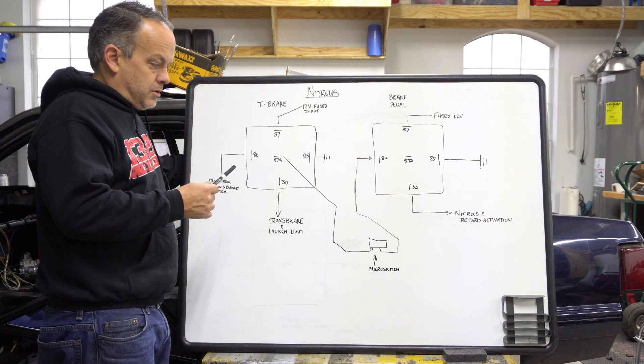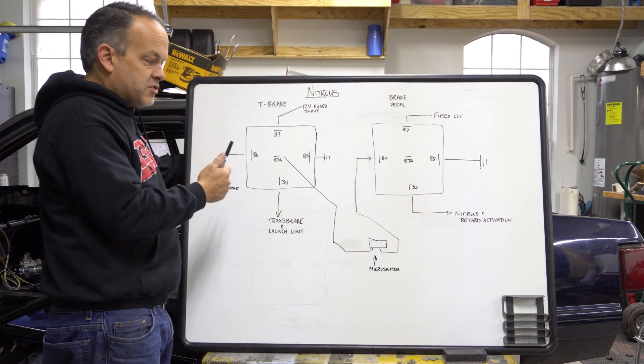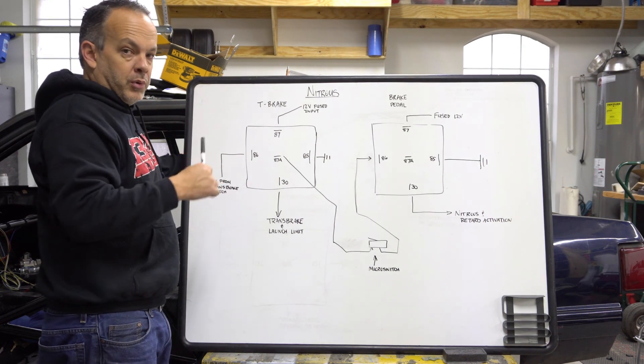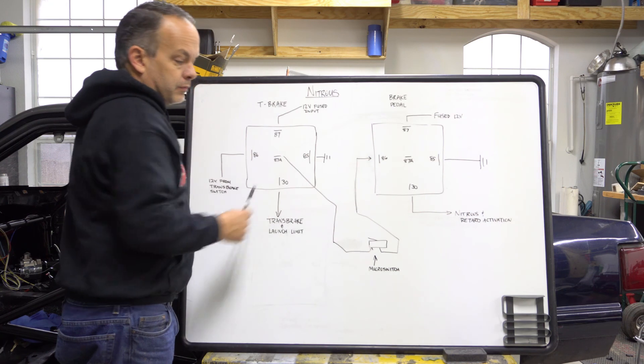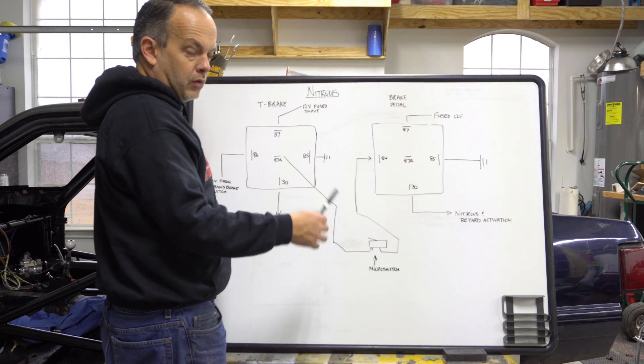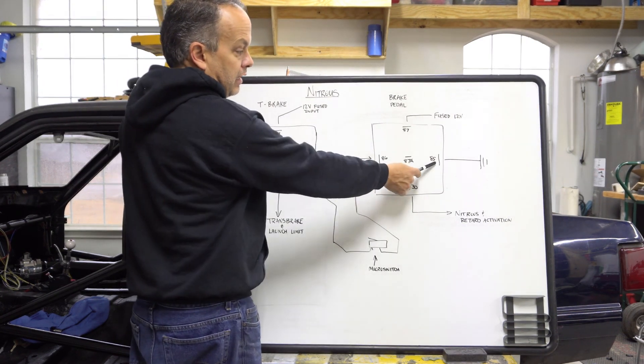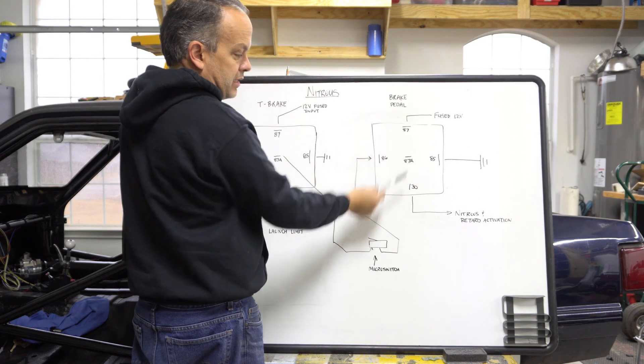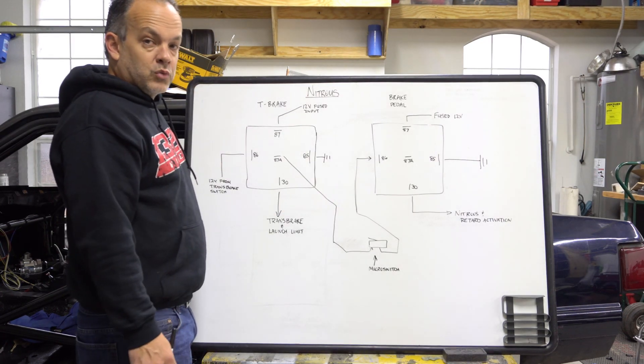Now just as a bonus, here is a diagram on how to do the same thing with a nitrous car. Post 86 is your 12 volts from your transbrake button. 85 is the ground. 30 goes to the transbrake solenoid. 87 is the 12-volt input with a fuse. Remember, 87A is live when the relay is open, so it's sending 12 volts out. So what we're going to do is we're going to wire 87A into the microswitch, which is on your carburetor, your throttle linkage, or whatever. When that microswitch is closed, it's sending 12 volts to 86. 85 is grounded. That relay turns on. It has fused 12-volt input on 87, and then post 30 sends the power out to the nitrous. Don't forget to put the retard wire on there so the timing is retarded when the nitrous is activated.